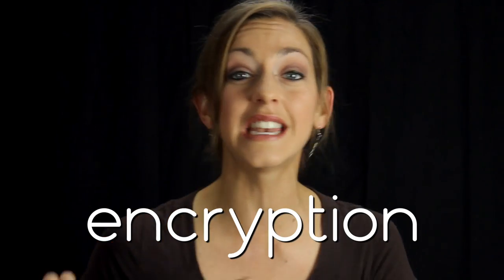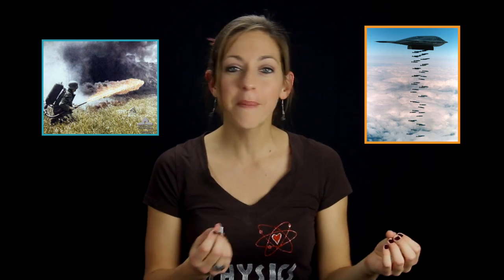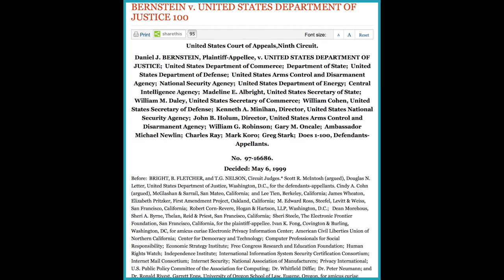That's why encryption, or translating information into a code only the right people can read, is so important. So important that it was put on the United States munitions list along with flamethrowers and bombs as a weapon regulated for national security. That was until a student took the United States government to court and encryption was ruled free speech. Now most of the focus is on improving encryption because as computers get smarter and faster, these codes become easier to unscramble. That's why we need to turn to cutting-edge physics to improve encryption.